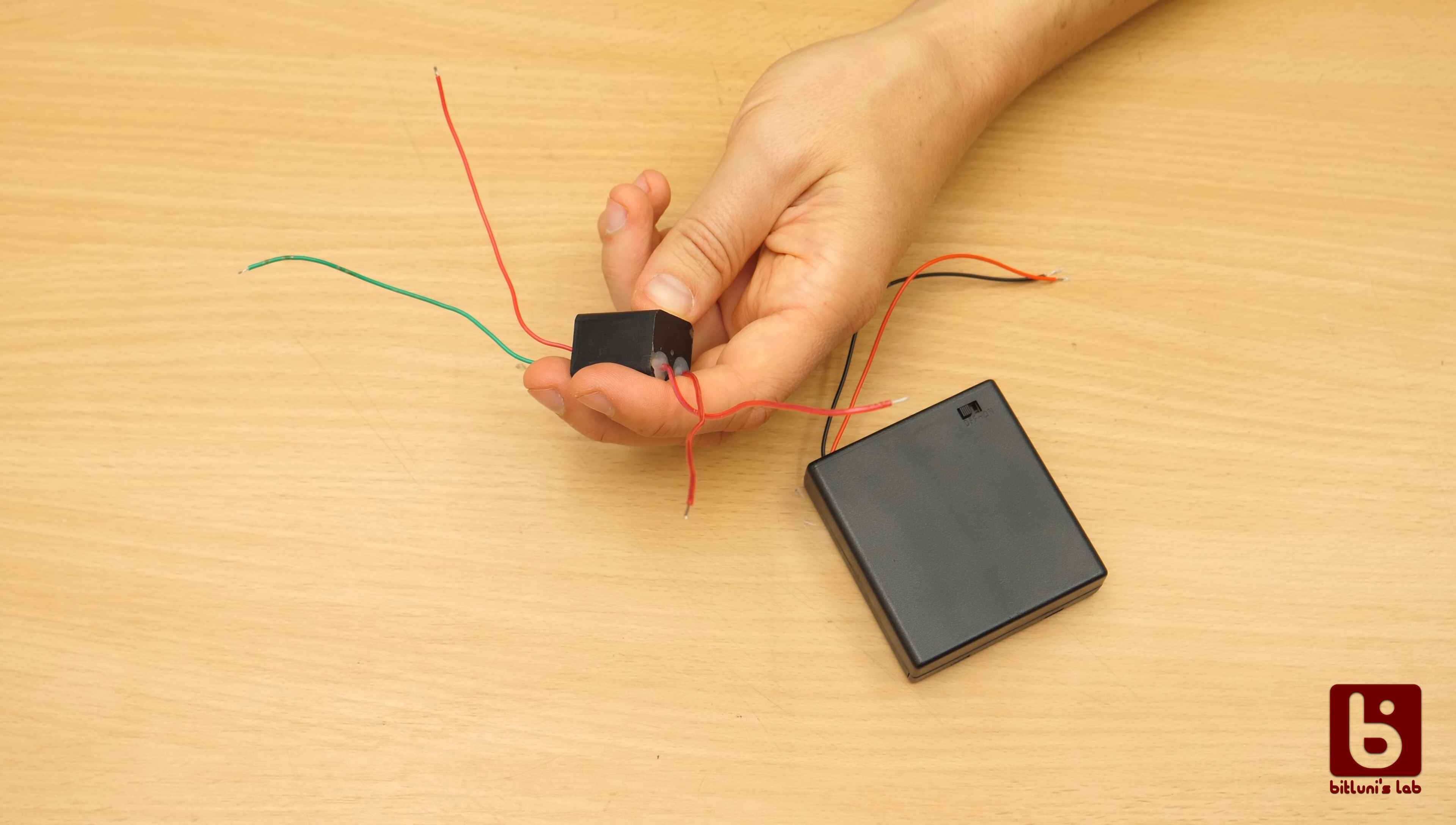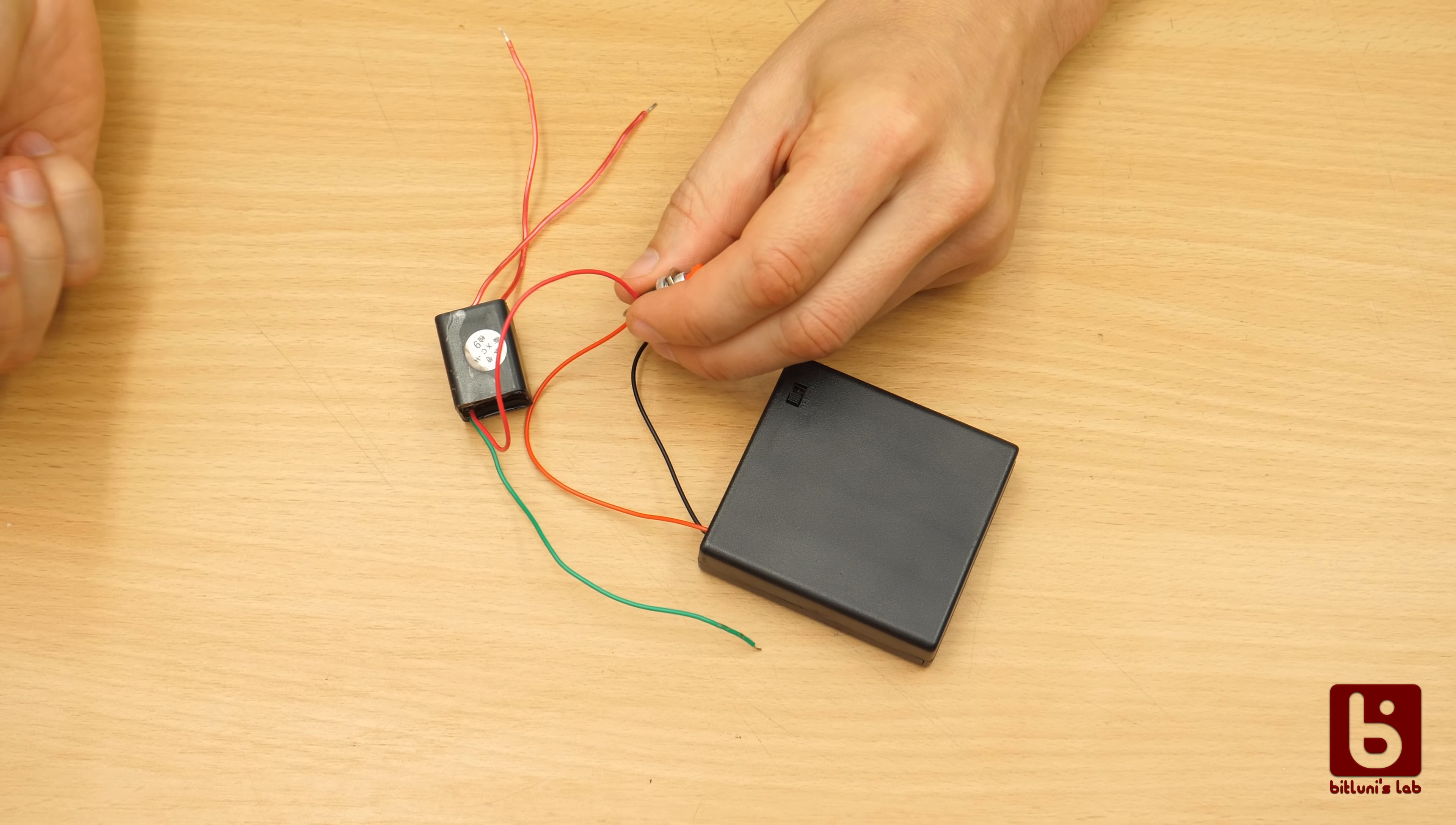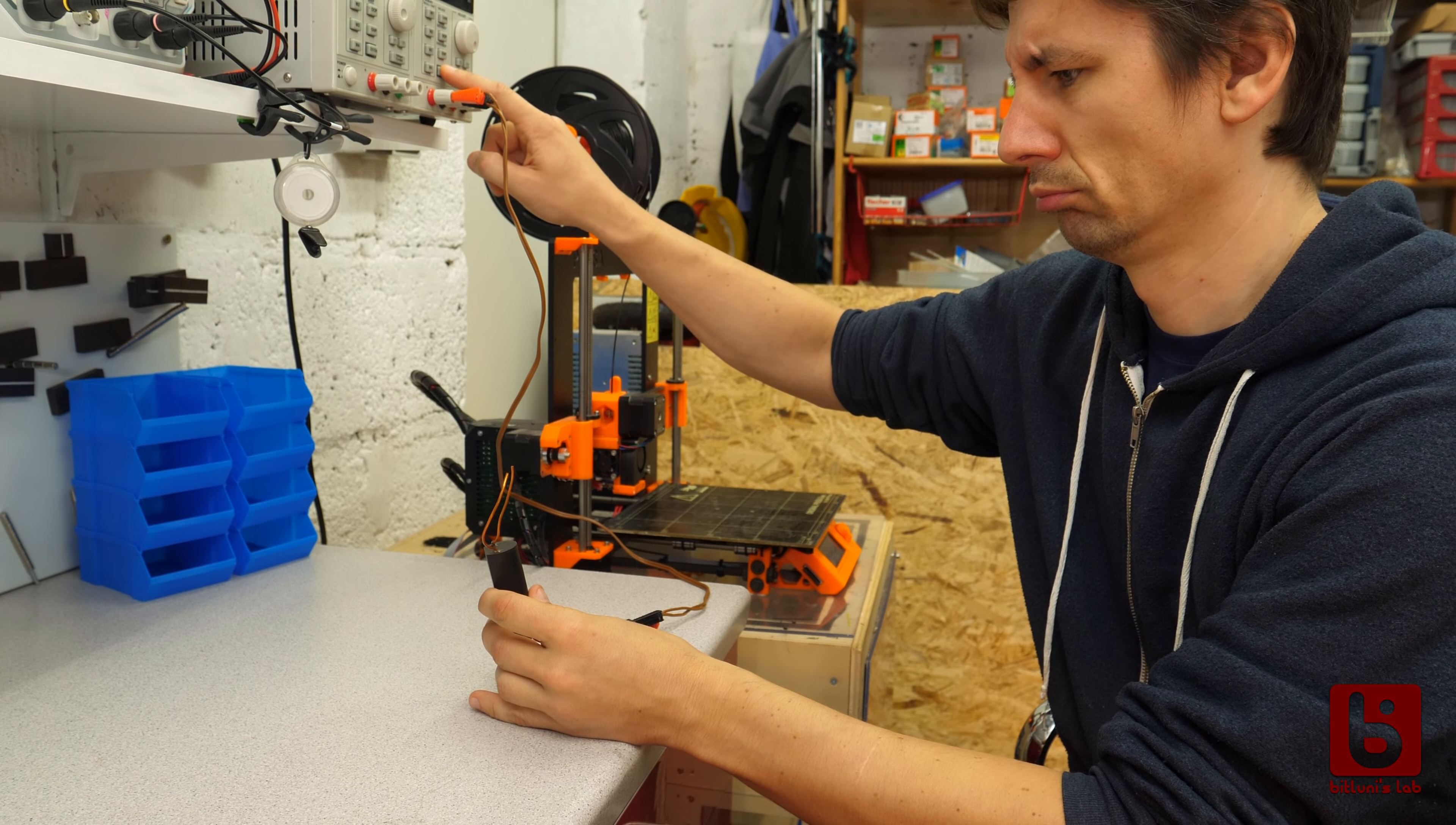The high voltage will create an arc. Roughly 1mm per 1000 volts. But these transformers are not built to run continuously so I will add a simple push button between the positive wires which are red here. Find the links to the parts in the description below.